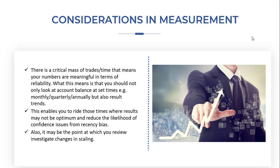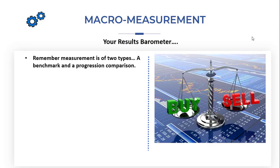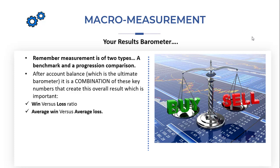It doesn't mean you ignore it — it just means you need to do a little more digging into how you can make it better next time. Also, when you do these regular reviews of your overall numbers, it may be an indication of whether you have some degree of reliability and can look at potentially scaling up your trading. Now let's look at macro measurement in more detail, starting with what we call your results barometer. Measurement is of two types: a benchmark measurement — where you are now — and a progression comparison, where you compare that benchmark versus how you're developing over a series of result measurements.